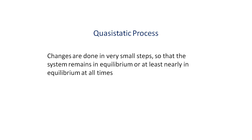A quasi-static process is one in which the changes to the system while going from one equilibrium state, say A, to another, say B, are done in very small steps so that the system remains in equilibrium, or at least nearly in equilibrium, at all times while going from A to B. At each step, the system is allowed to equilibrate and since there are many particles in the system, this happens very slowly.